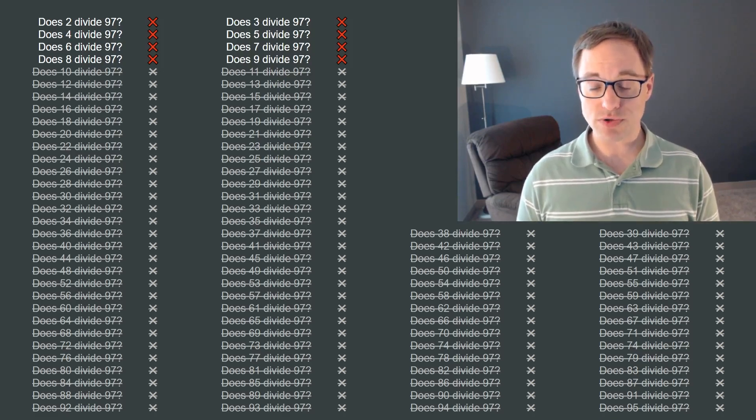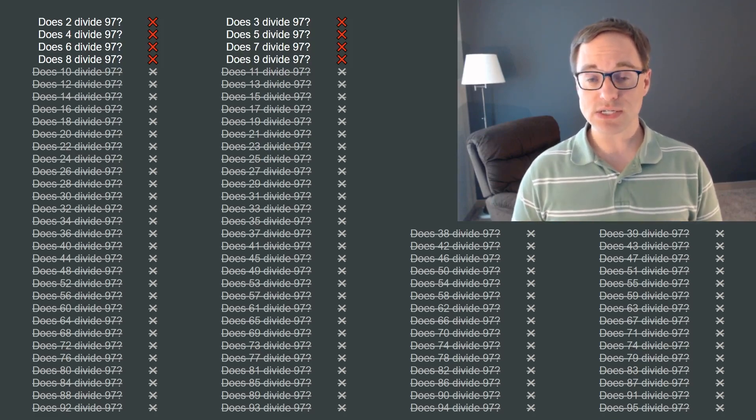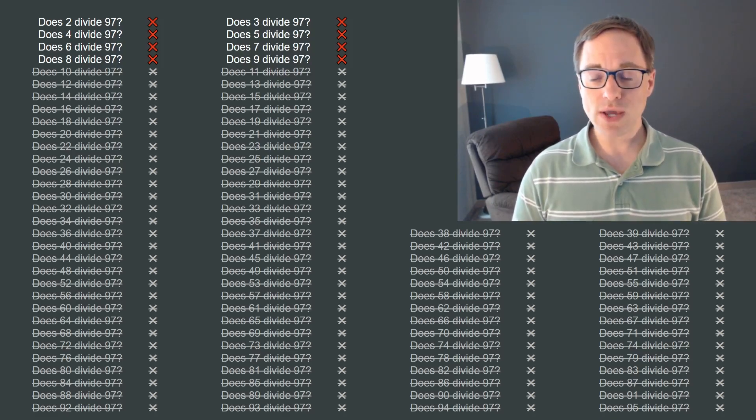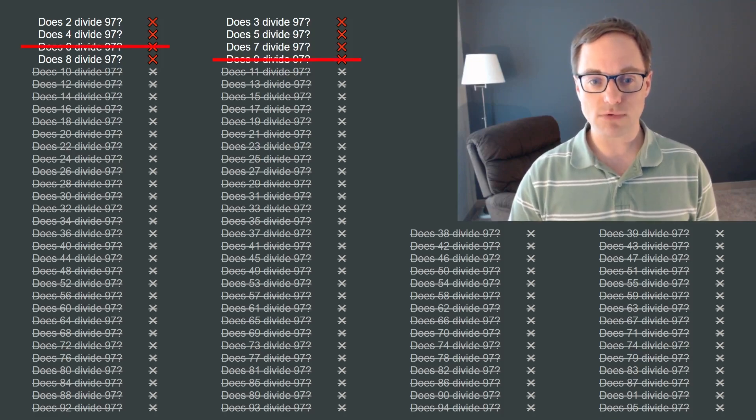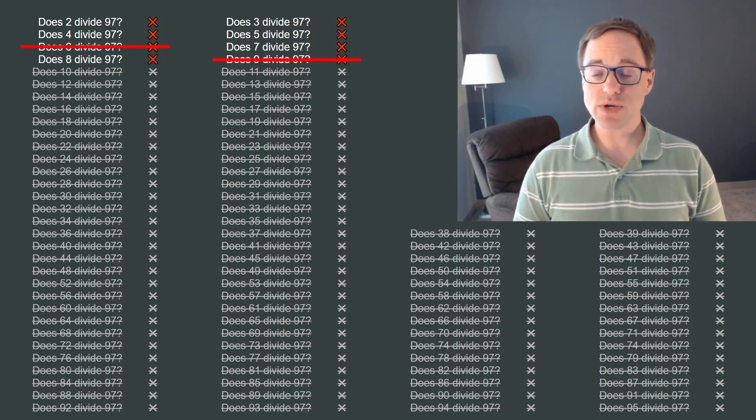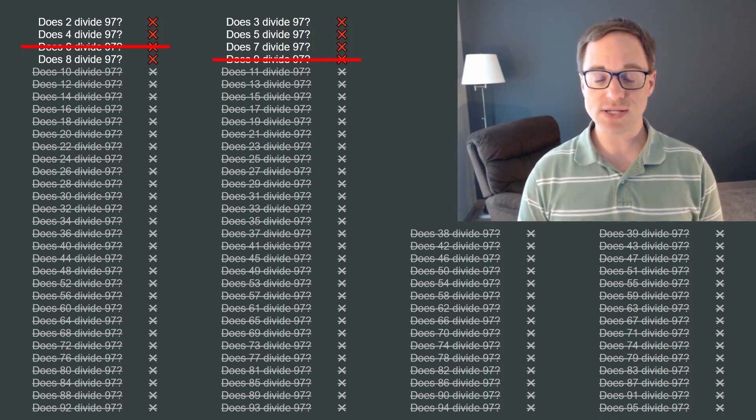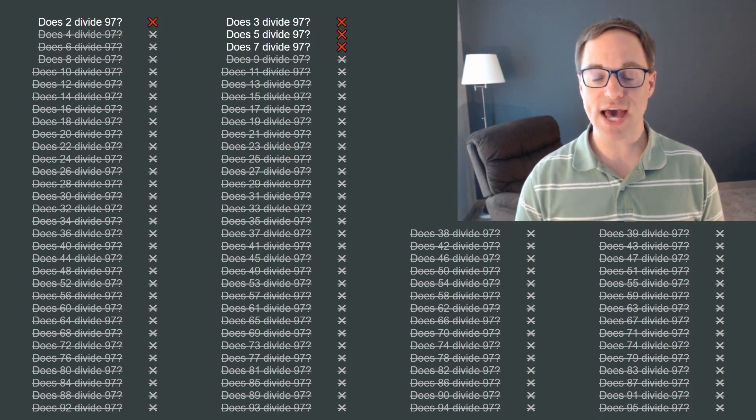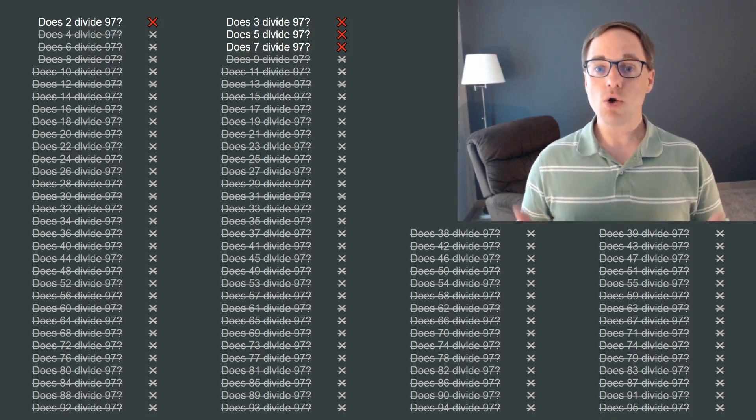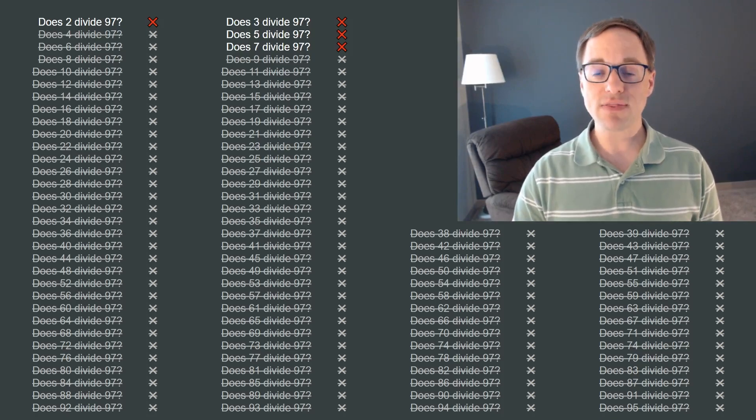But even with this shorter list, you might notice some redundancy. For example, once we see that 3 doesn't divide 97, we know that any multiple of 3 also doesn't divide 97, so 6 and 9 are out. Similarly, once we check that 2 doesn't divide 97, we know that no other even number can divide 97 either, so 4 and 8 are out. In fact, we only have to consider prime numbers as divisors because any composite number will necessarily have some smaller divisor that we've already considered.